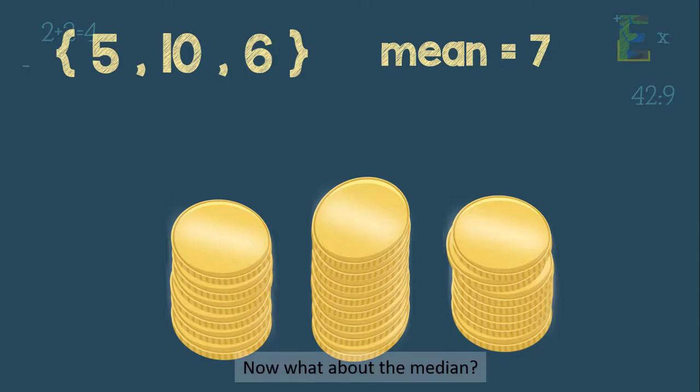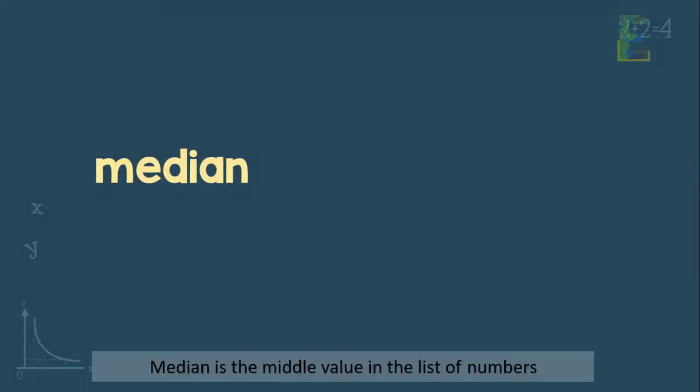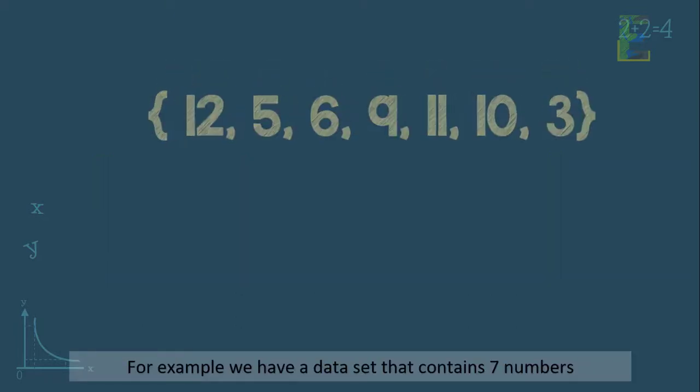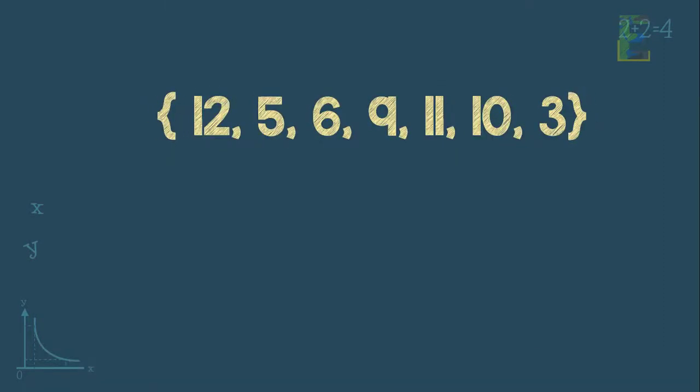Now what about the median? Median is the middle value in the list of numbers. To find the median, we need to arrange the number in ascending order from the least number to the highest number. For example, we have a data set that contains 7 numbers. And these are 12, 5, 6, 9, 11, 10, and 3.